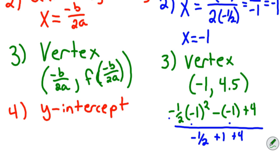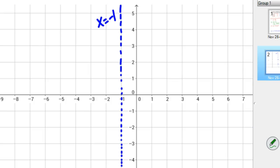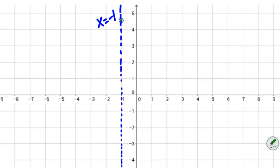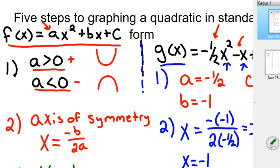So my vertex is negative one comma four point five. And so we'll go ahead and graph that on the function. So negative one, four and a half. So you go left one, up four and a half, and right there is my vertex. So it's going to open down where that's your maximum value in this case.